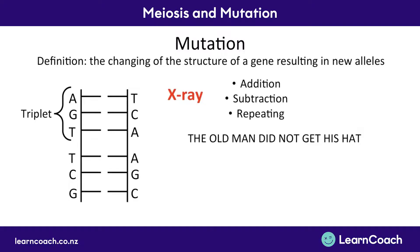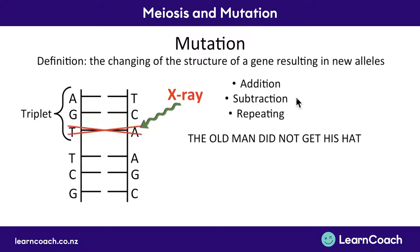Say an x-ray comes in and hits one of these base pairs — three things can happen. One, the body could add in another base pair, an extra C-G or T-A coming in. Or it could subtract something out — completely take away a T-A pair. Or it could cause one to repeat, so it might go T-A, T-A, T-A and just add it in.